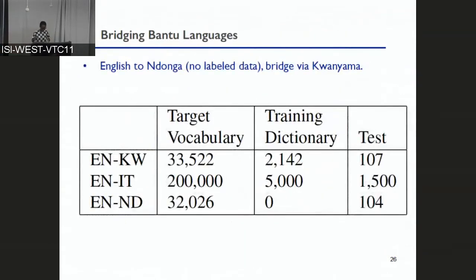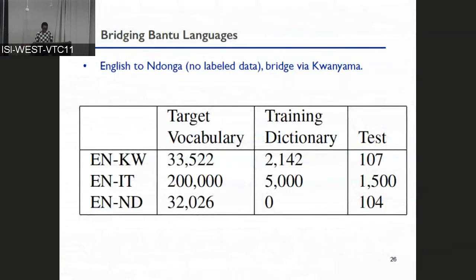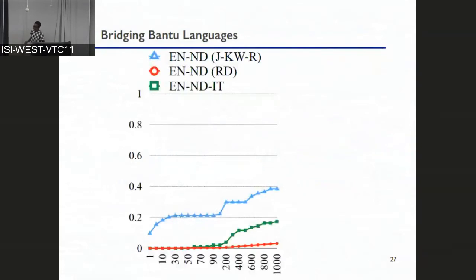We show experiments for two Bantu languages. We want to translate from English to Ndonga but have no labeled data for that. We do have labeled data for English to Kanyama — a dictionary of about 2,000 entries — and a dictionary of about 5,000 entries for English to Italian. When we use the path that goes through another Bantu language, shown as the blue line, we are doing much better than if we go through something as distant as Italian.